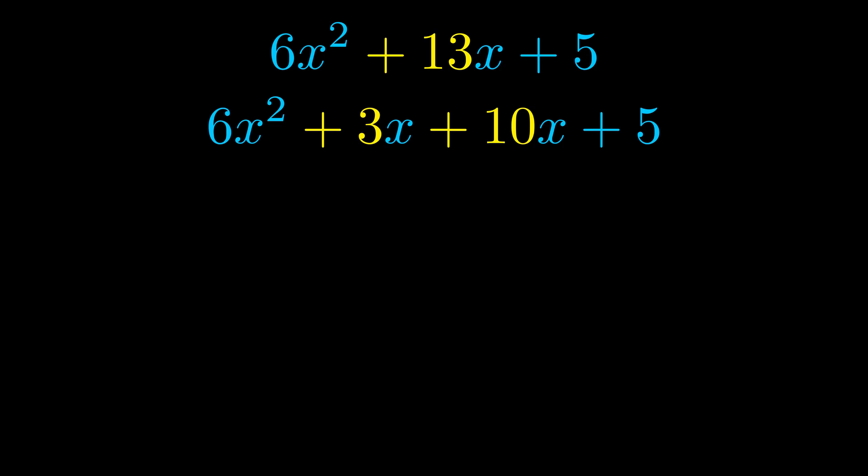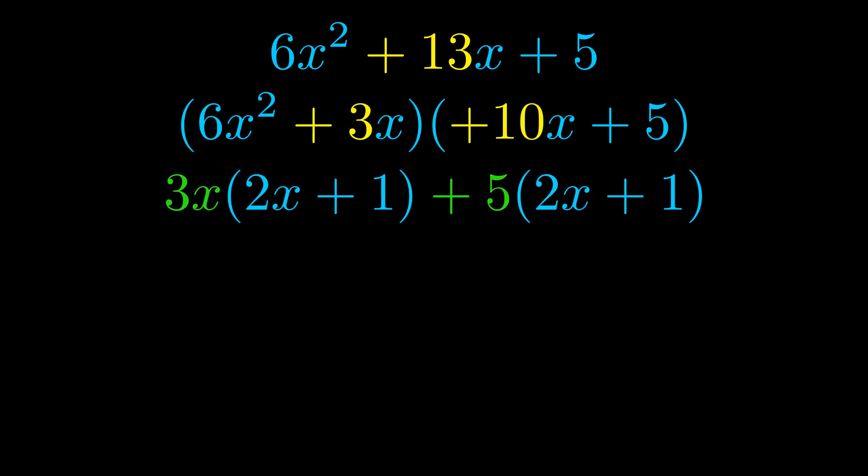Once we've done this we go ahead and we put parentheses around the first term and the last term. And we do that so that we can take the greatest common factor out of both terms. We can see the greatest common factor is now outside in green. Notice also how what remains inside of the parentheses is the same in both cases.